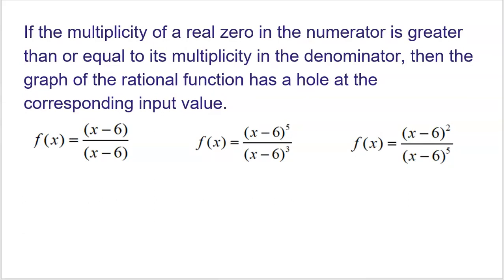Let's take a look at a couple of examples. The multiplicity idea can be a little weird, so I want to be very clear. If the multiplicity of a real zero in the numerator is greater than or equal to its multiplicity in the denominator, the graph has a hole. Here's our first example where we see the factor x minus six in both the numerator and denominator. That produces a zero of x equals six, and the multiplicity on both is one. So that's going to be a hole at x equals six.